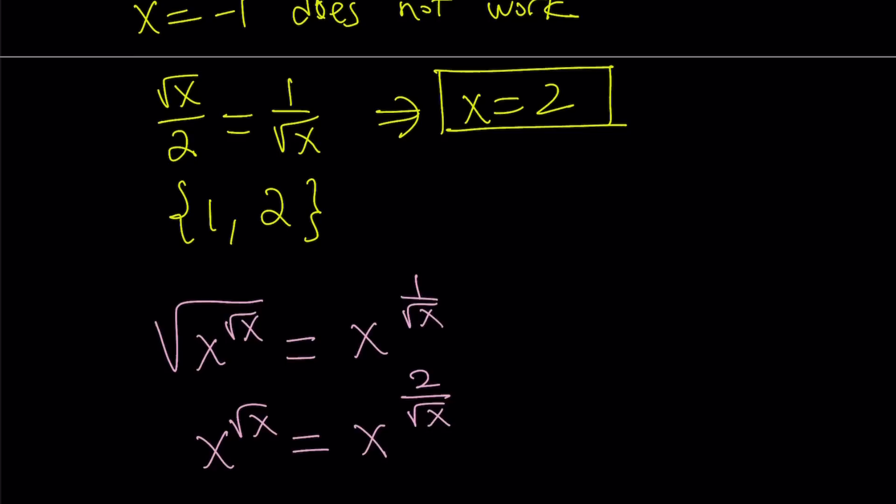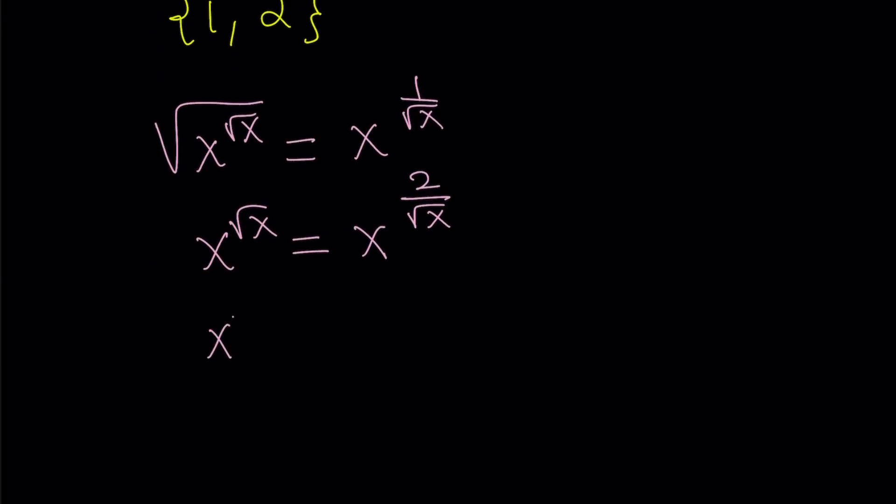And then we can set the bases equal to each other. We can raise both sides to the power of square root of x. That's another approach that I like. But of course, you have to be careful about the domain here. x cannot equal 0, and x always needs to be positive. Under those conditions, we get x to the power of x equals, and the square root of x cancels out. As long as x doesn't equal 0, we get x squared.